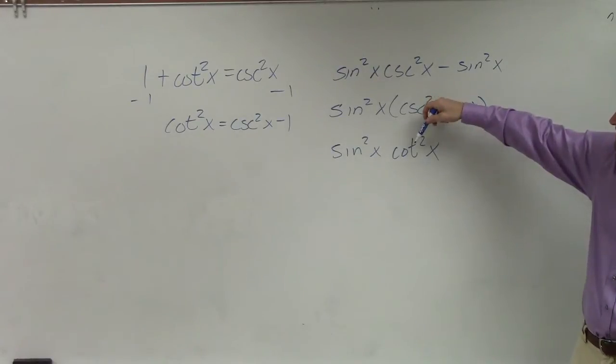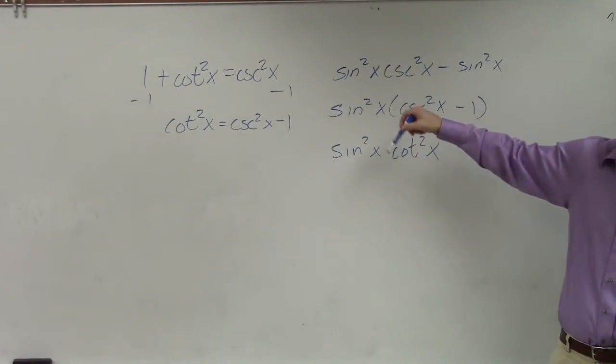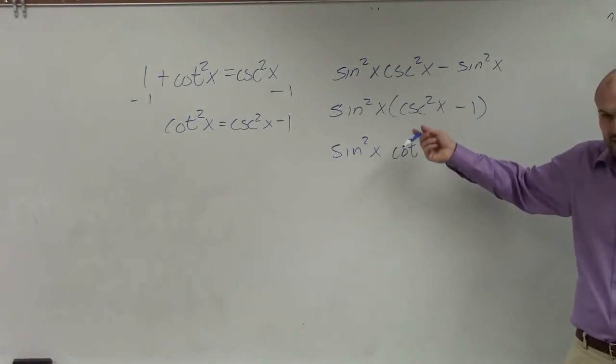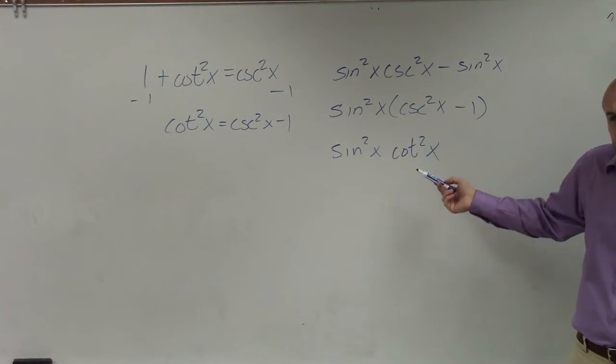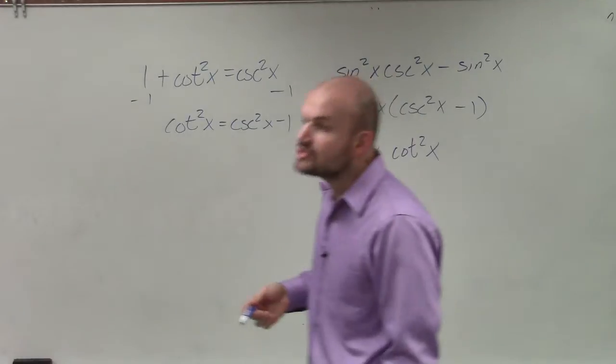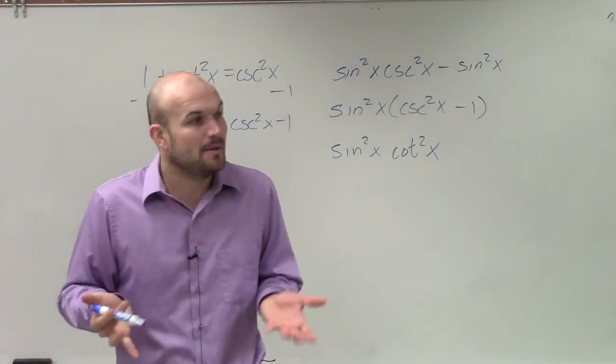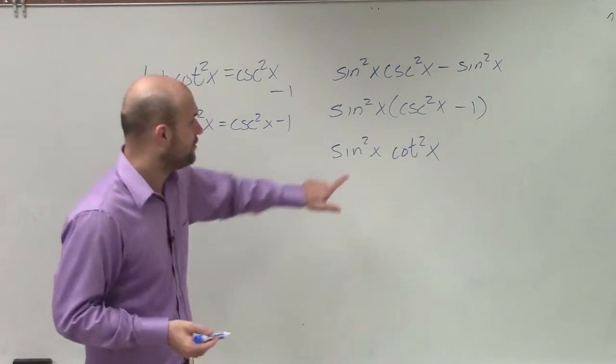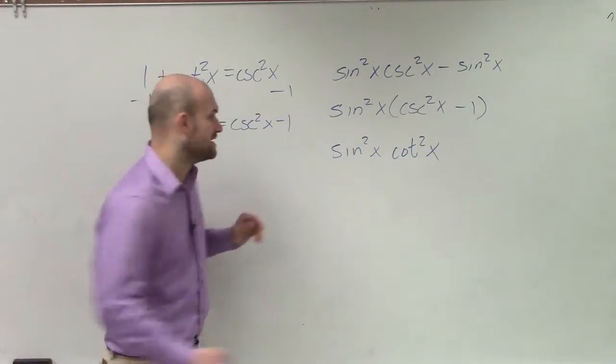Well, if I rewrite this as cotangent squared as 1 over tangent squared, that's not really going to help me out, right? However, cotangent, remember by the quotient identity, is made up of sines and cosines. So let's rewrite this using the quotient identity.